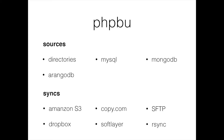This is the whole configuration file. It's not very detailed — you can specify lots of options for all these things. For the MySQL dump source, for example, you can specify username, databases, and a lot more. Check out the documentation for that. PHPBU does not only backup MySQL — it also backs up directories, MongoDB, and ArangoDB. It syncs to the cloud services I mentioned before, and you can also use any rsync command within your own network to sync your backups very easily.